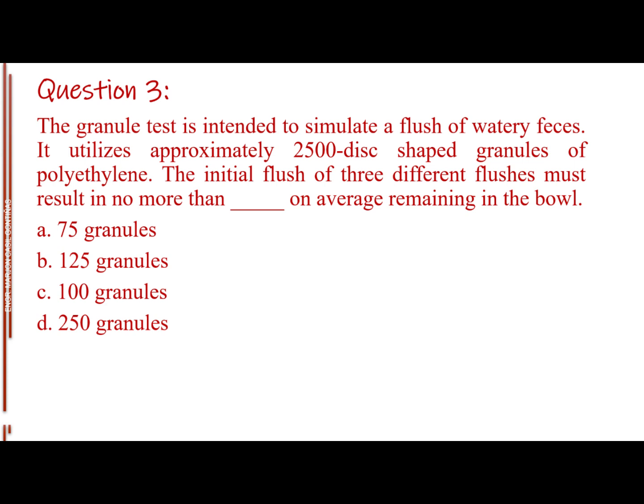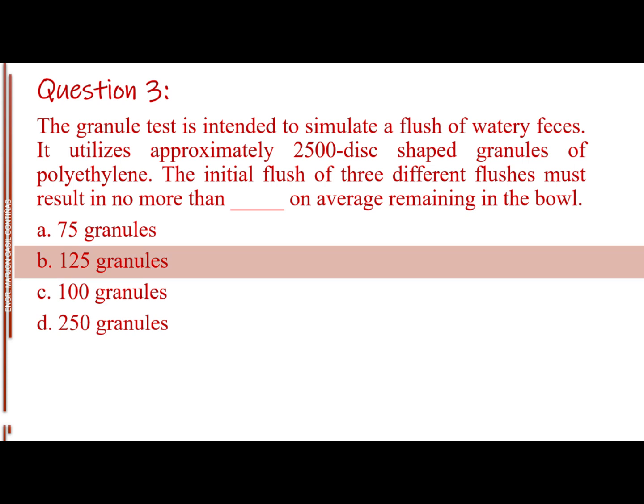Question number 3. The granule test is intended to simulate a flush of watery feces. It utilizes approximately 2,500 disc-shaped granules of polyethylene. The initial flush of three different flushes must result in no more than blank on average remaining in the bowl. Letter A, 75 granules. Letter B, 125 granules. Letter C, 100 granules. Letter D, 250 granules. The answer is Letter B, 125 granules.